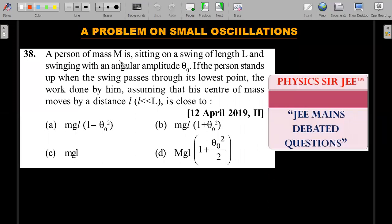A person of mass capital M is sitting on a swing of length L and swinging with an angular amplitude theta naught. If the person stands up when the swing passes through its lowest point, the work done by him assuming that his center of mass moves by a distance of small l which is very small in comparison to the capital L is close to. In the options there are small m's everywhere.